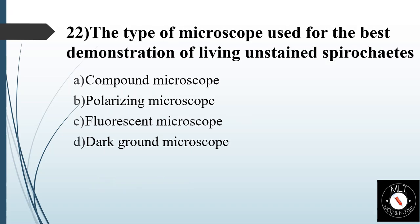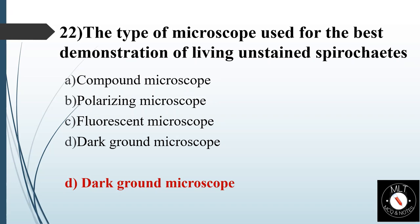Twenty-second question. The type of microscope used for the best demonstration of living unstained spirochetes. Option A: Compound microscope. Option B: Polarizing microscope. Option C: Fluorescent microscope. Option D: Dark ground microscope. Answer is Option D: Dark ground microscope.